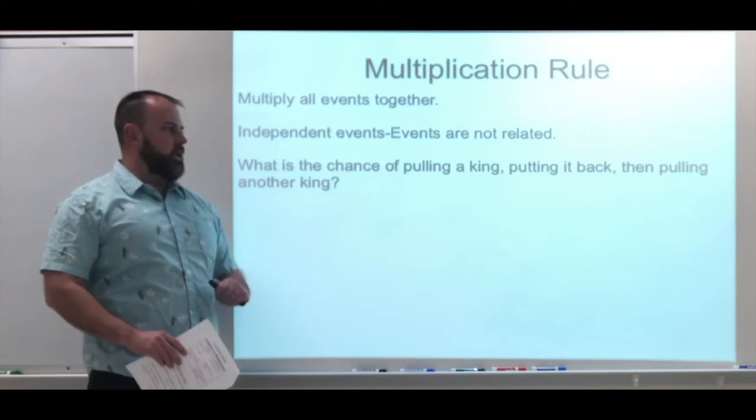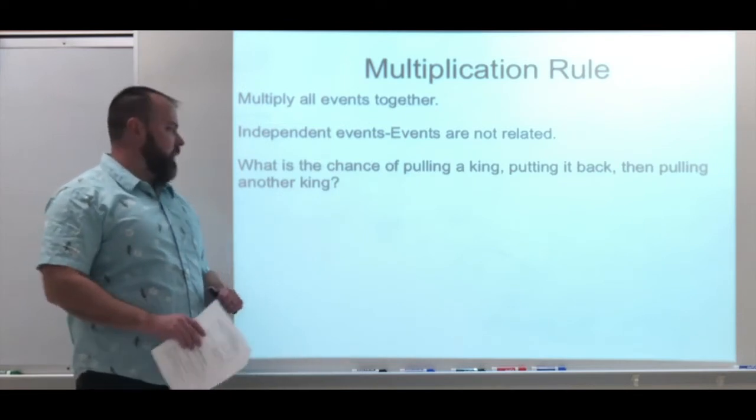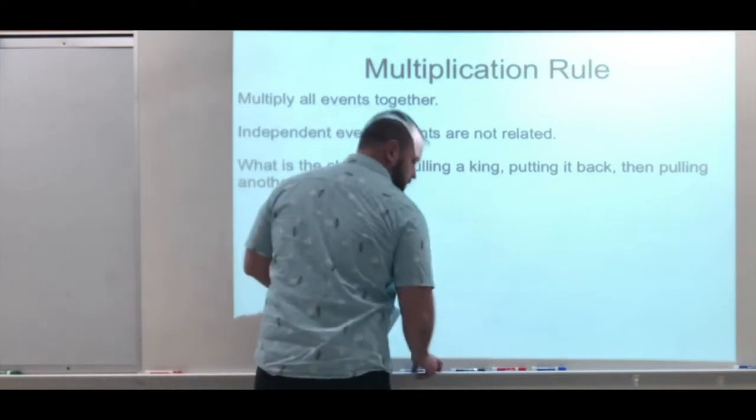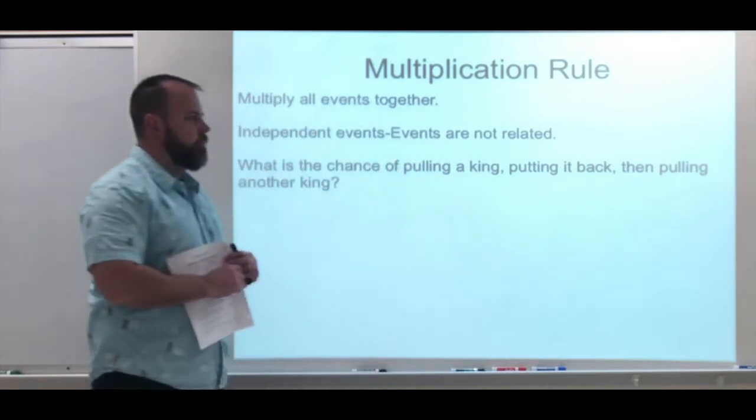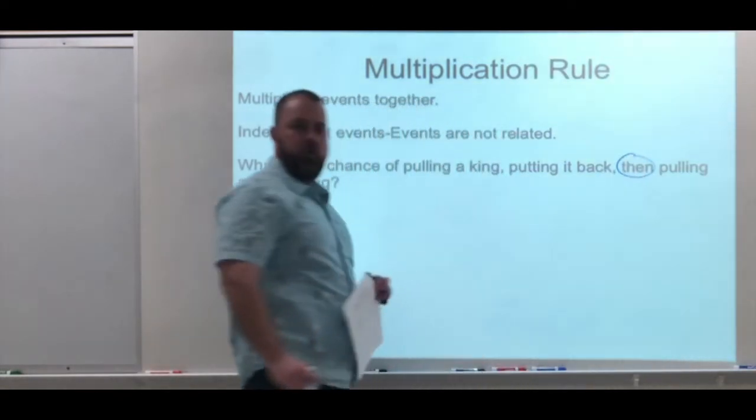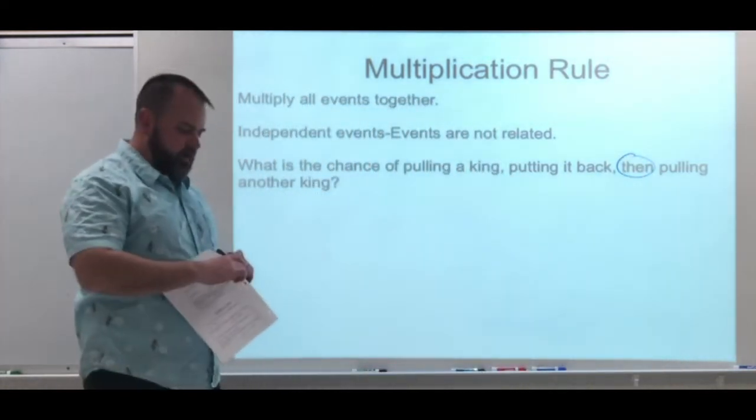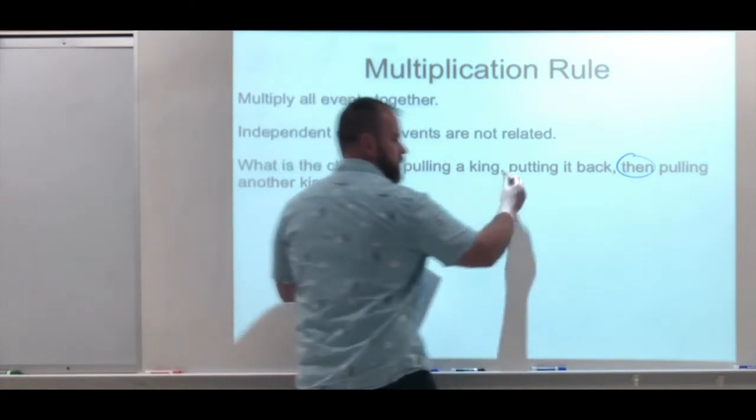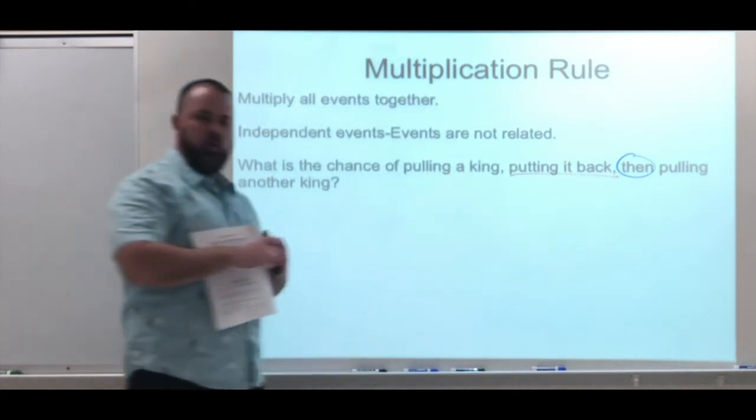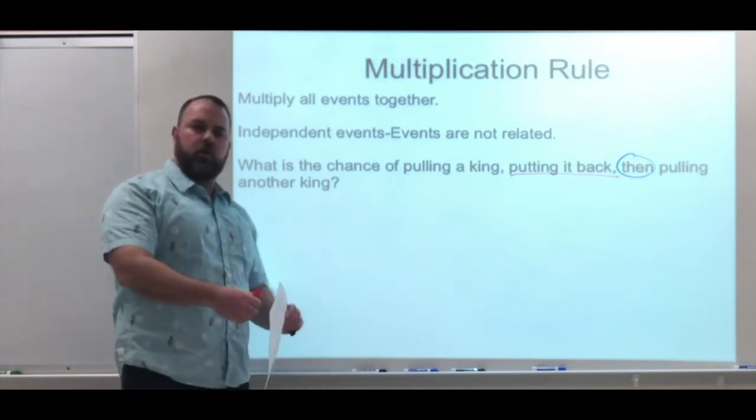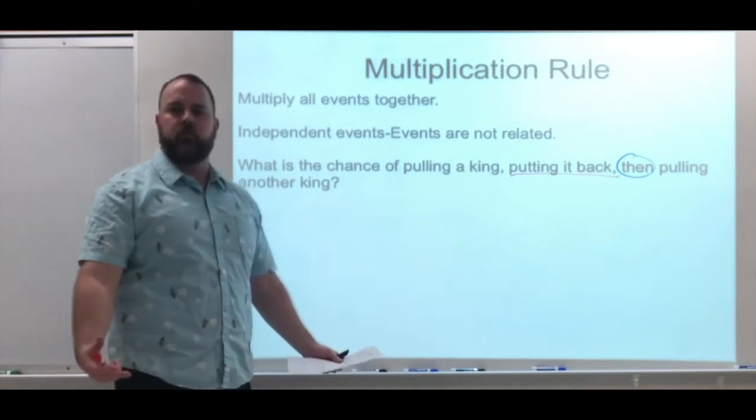What's the chance of pulling a king? Putting it back, then pulling another king. So right there, we have a couple key things to point out. We have our keyword, then. That shows that we're multiplying. We also have that phrase, putting it back in. Now what that's doing is making it an independent event. You put that card back in, we still have 52 total cards.